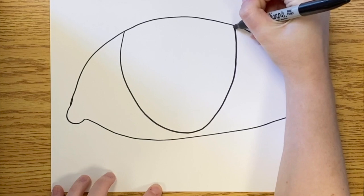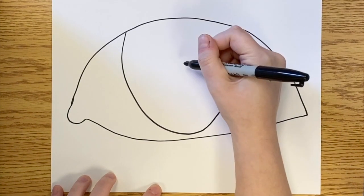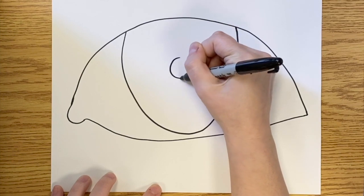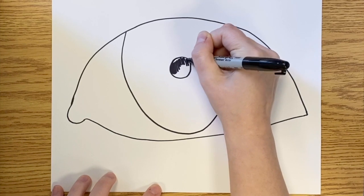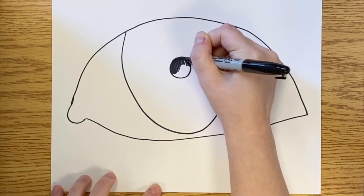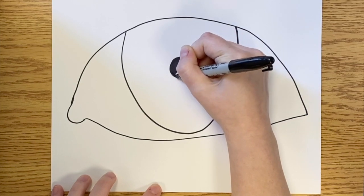Now I'm drawing in the iris of my eye, and I do that by making a really big U shape. Now I'm drawing in a small circle in the middle of my iris and coloring it in completely black. This is what's called the pupil, or the part of your eye that focuses on things.